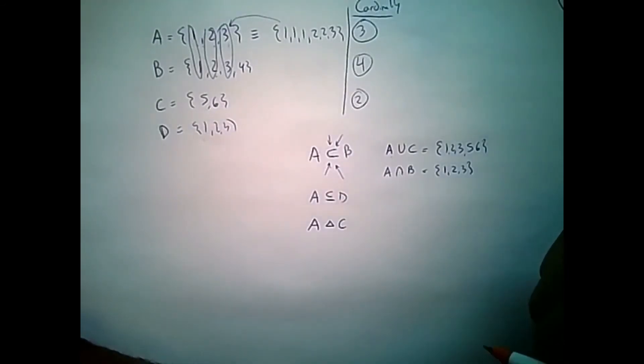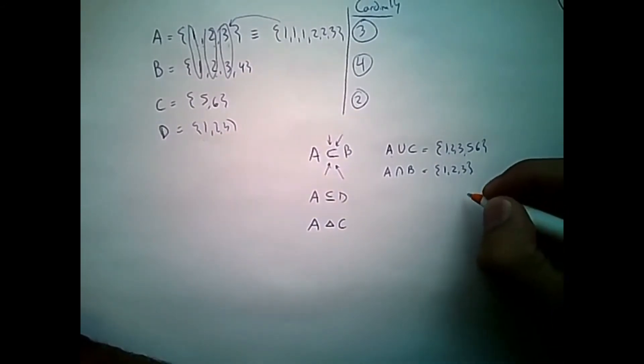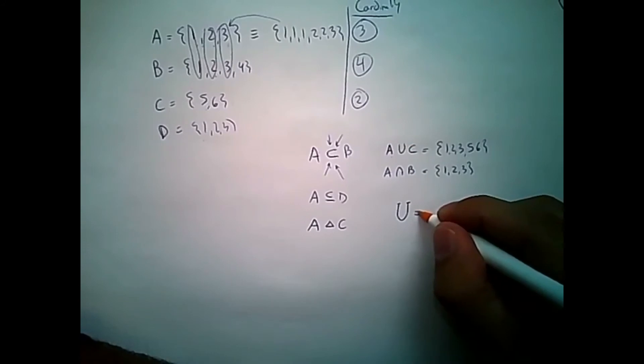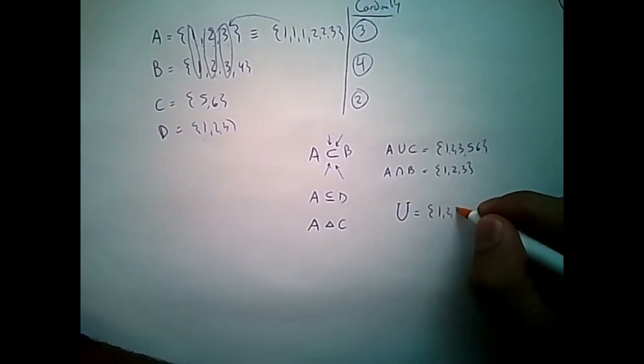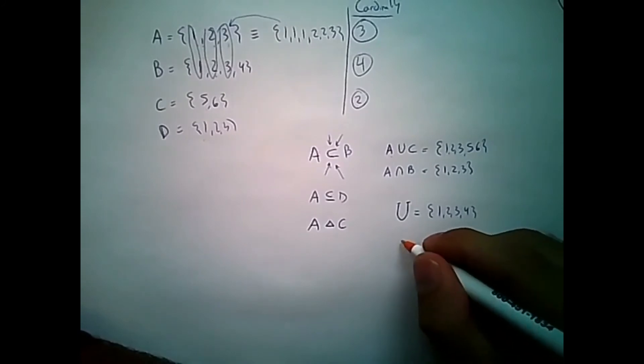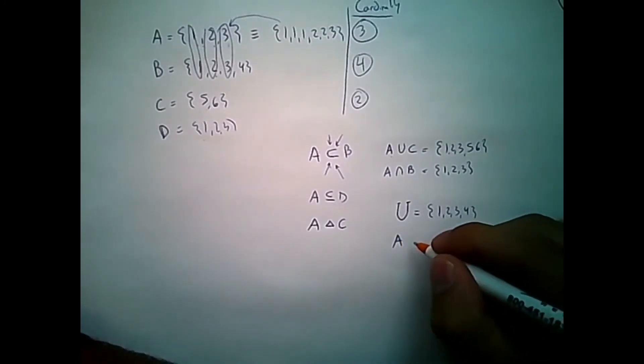Okay. Similarly, we can perform some other operations, like the complement. If our universe, which I'm going to call U here, not to be mistaken with the union sign, is the numbers 1, 2, 3, 4.